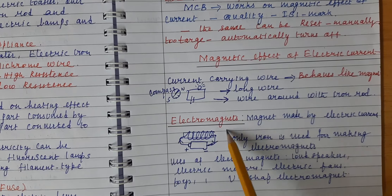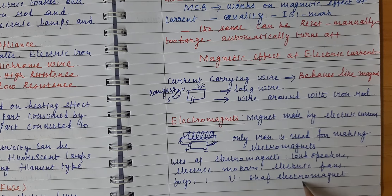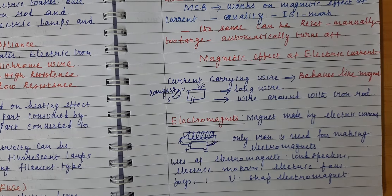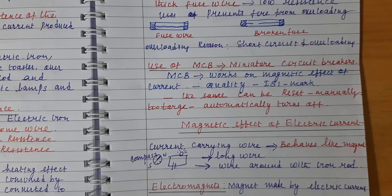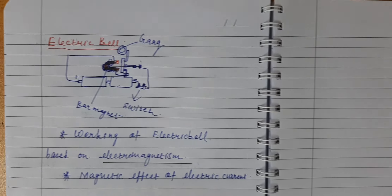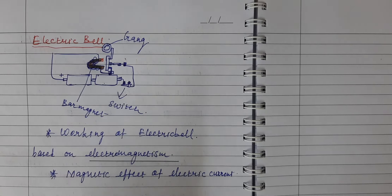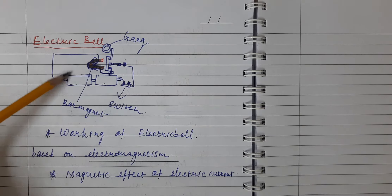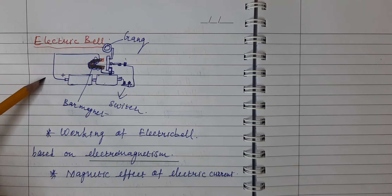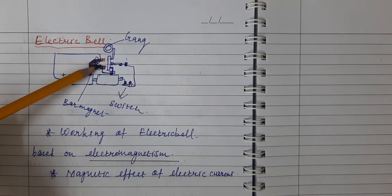The electromagnetic property is used in electric motors, electric fans, and toys. U-shaped electromagnets are mostly used for these purposes. The next topic is how an electric bell works — it works on the basis of the electromagnetic property, by passing electric current to generate electromagnetism, which makes the bell ring.